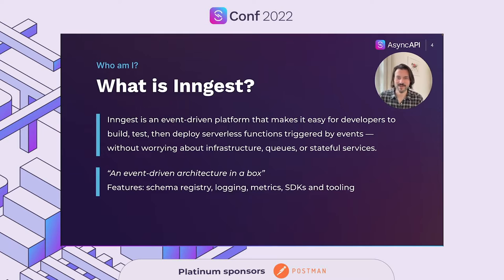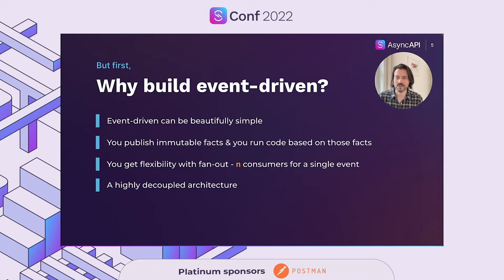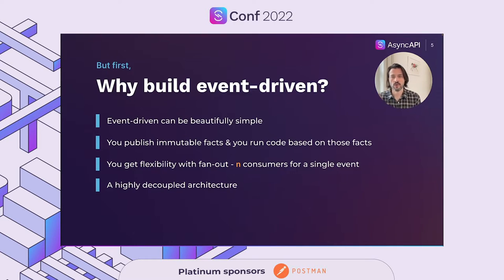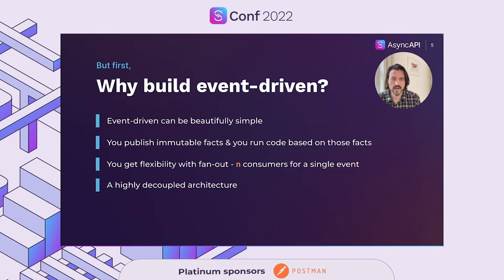Let's go back to our agenda and start with why build event-driven. I don't believe that I need to convince this audience, but with the focus of this talk, I wanted to share my opinion. I think that event-driven architecture can be beautifully simple. The way that I think about it is that you're publishing facts and running code using those facts. The other key benefits are flexibility with multiple consumers of the same event, which then naturally leads to being able to create highly decoupled architectures.